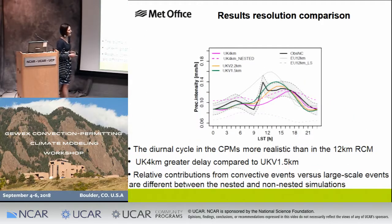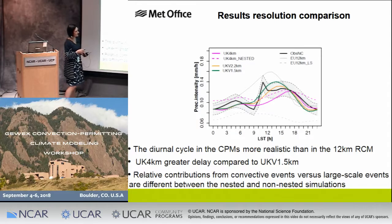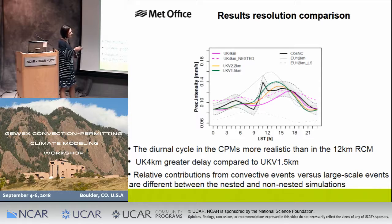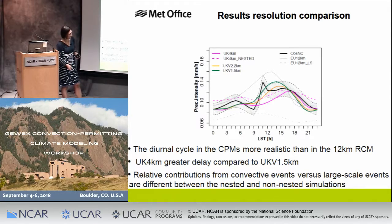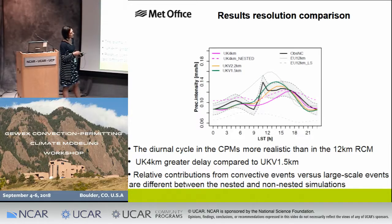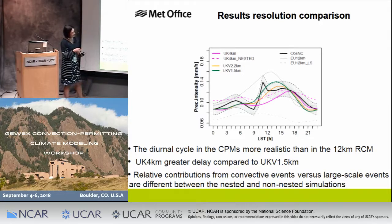Looking at the diurnal cycle, the 12 km in gray shows the common problem we know. Observations in black show a peak roughly where the 1.5 km peak is. Increasing resolution — from 1.5 km green to 2.2 km orange to 4 km pink — produces a delay in the afternoon peak that is usually related to convection, because the 4 km needs more time to build up conditions to trigger convection. Interestingly, the nested version, despite having the same problem as the 4 km, shows a more important morning peak because of the large-scale precipitation from the 12 km driver.